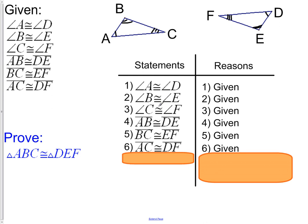Let's continue with the given information. We also have that AB is congruent to DE. We have that BC is congruent to EF. And lastly, AC is congruent to DF.